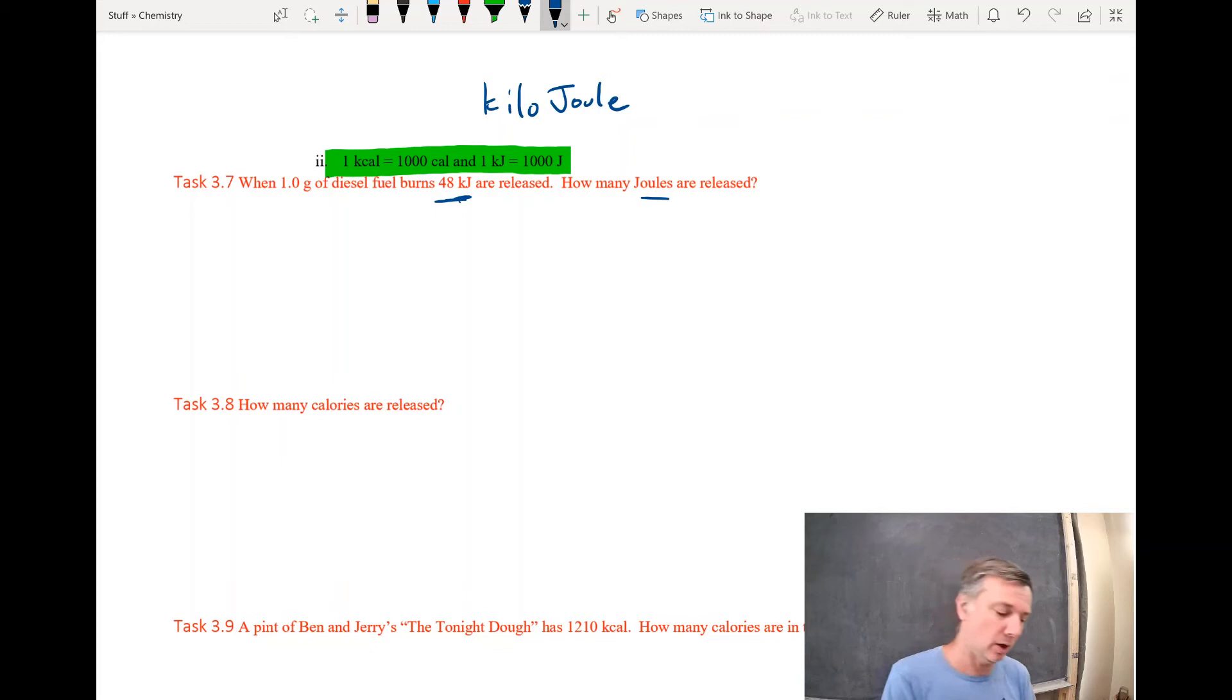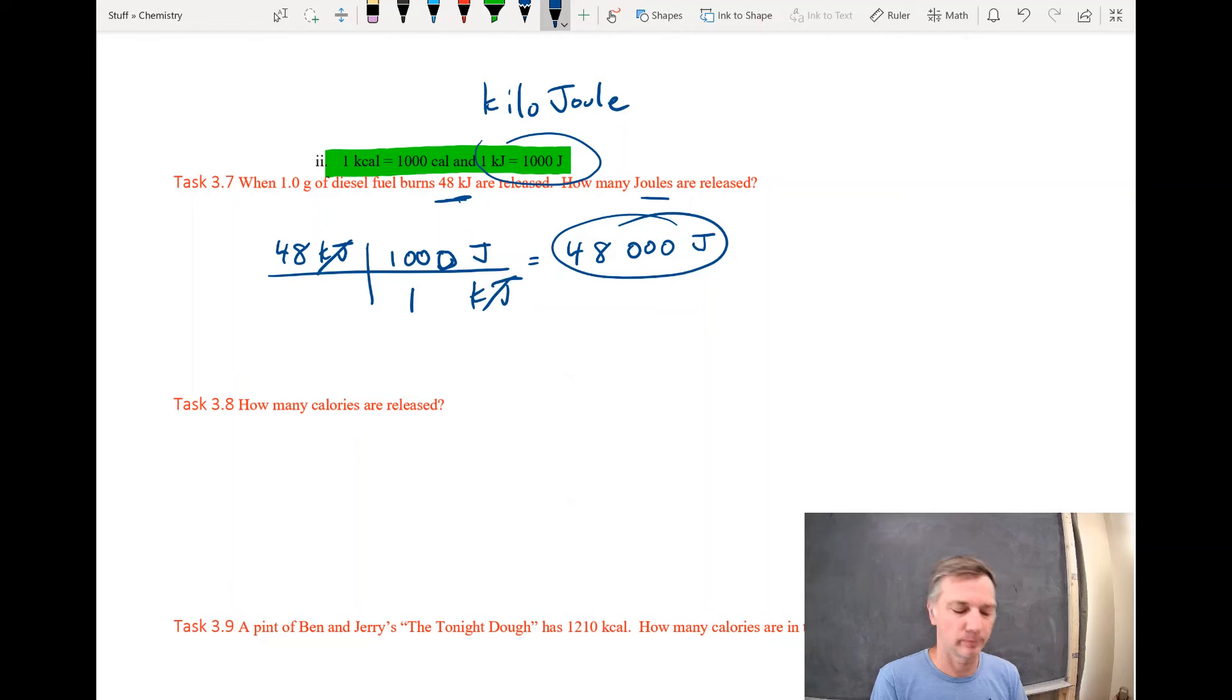How many joules are released? Again, we're going to use a T-chart. So we've got 48 kilojoules. I want to convert kilojoules to just joules. So kilojoules is on top. I'm going to put kilojoules on bottom. What do I want to take the place of kilojoules? I want joules. And as it turns out, and again, this is also on the pink sheet, 1,000 joules is one kilojoule. So this is 48 times 1,000, which happens to be 48,000. So there's 48,000 joules in 48 kilojoules. Try the next one.